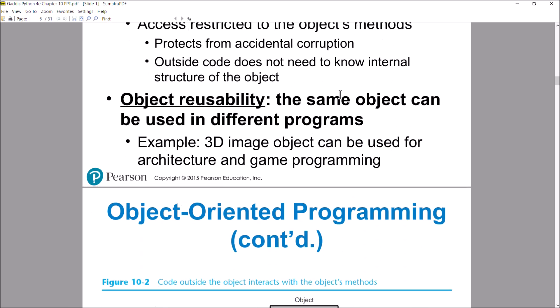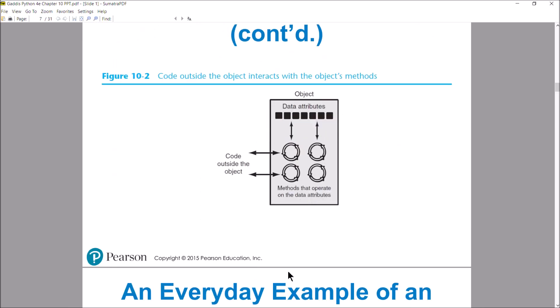Another benefit is object reusability. Just like we had functions that you could write and put into modules and then reuse those modules, you can do a similar thing with objects. You might have an object that is responsible for keeping track of test scores for a class. You define the code for that thing in a module, and then any program that needs something similar, you just import the module. So figure 10-2 — code outside the object wants to interact with this object, and the only way it accesses the data of those member variables at all is through the methods.